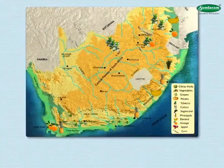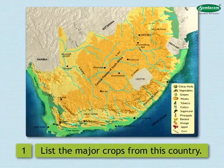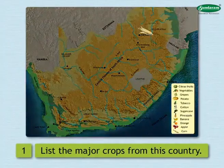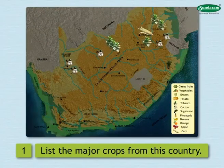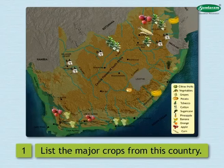See the map and answer the following. 1. List the major crops from this country. Major crops are maize, sugarcane, cotton, tobacco, potato, apple, banana, grapes, citrus fruits, vegetables, etc. 2. Which major commercial crops are shown on the map? Major commercial crops shown on the map are sugarcane, cotton, and tobacco.